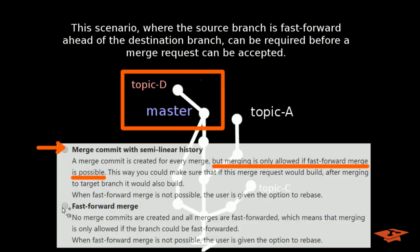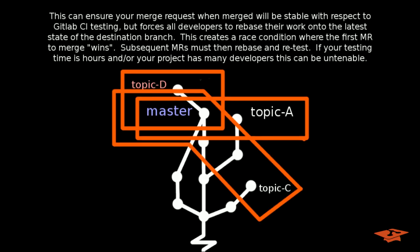So both this setting and the third setting, which we're going to talk about last, have significant workflow implications that we're going to talk about next. So with this semi-linear history setting, you can ensure your merge request when merged will be stable with respect to your GitLab CI testing, but this actually forces all your developers to rebase their work onto the latest state of the destination branch because it requires a fast forward merge.